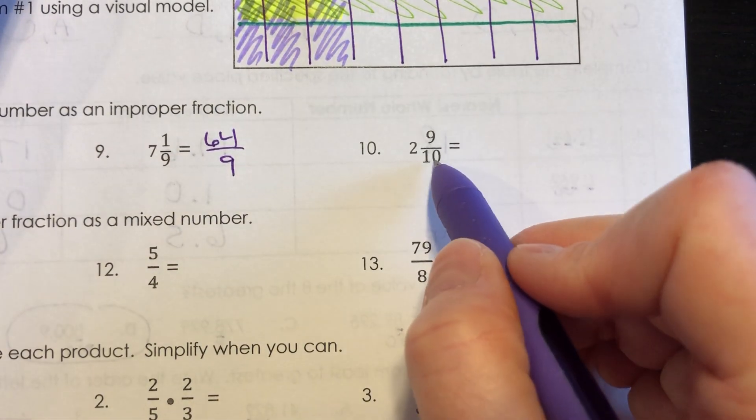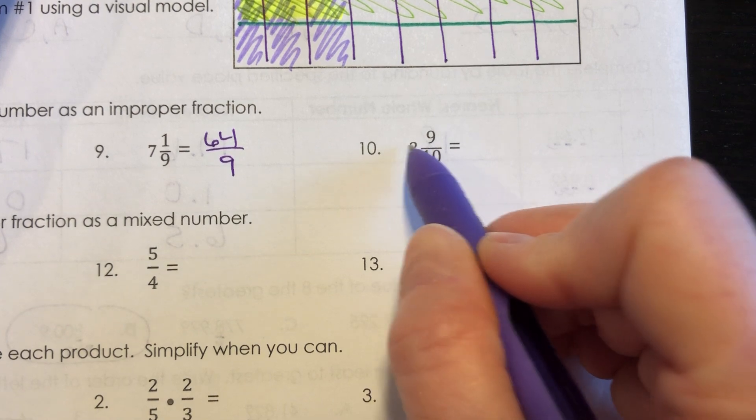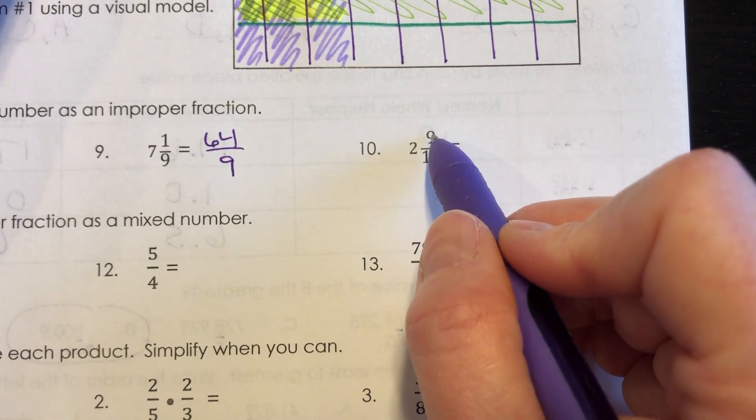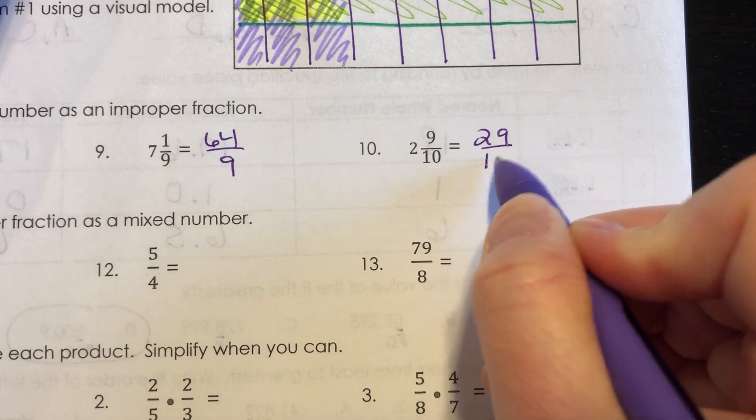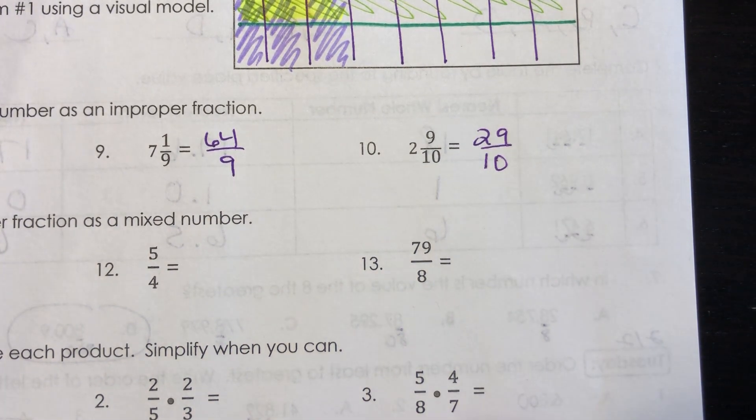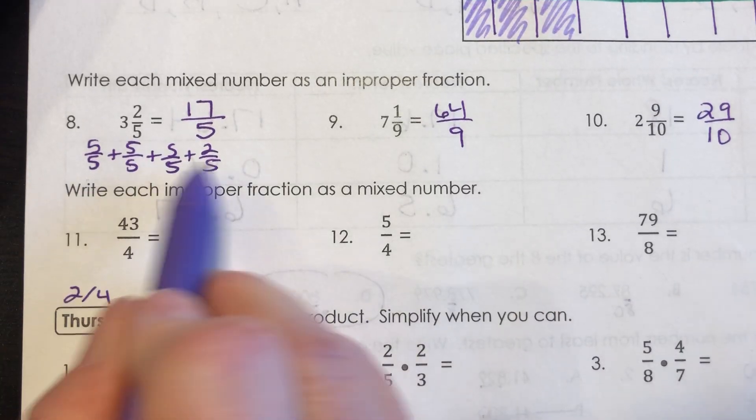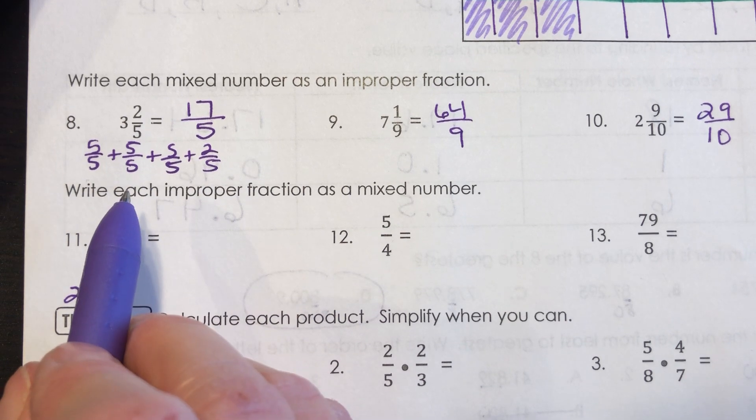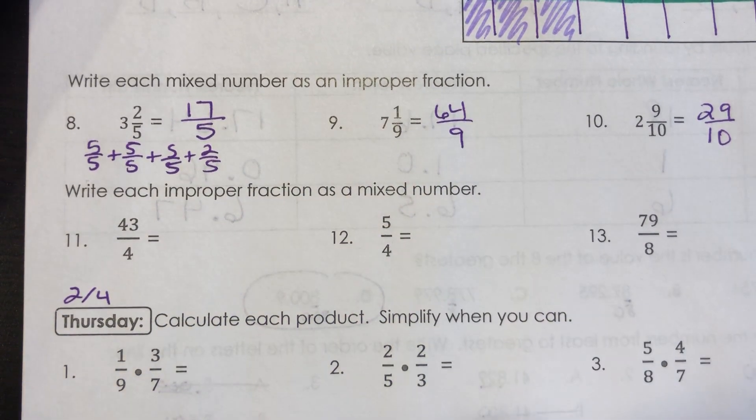For number 10, I'm going to have 10 twice. So 10 times 2 is 20, plus that extra 9 would be 29 tenths. And if you want to list this out, if that's helpful, then go for it. I just want you to be able to come up with this answer. It's not my way or the highway.